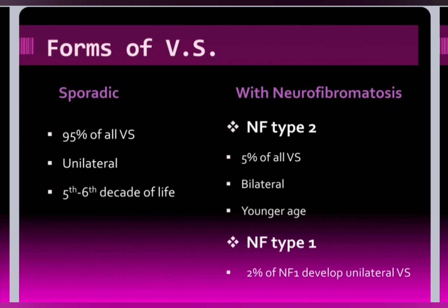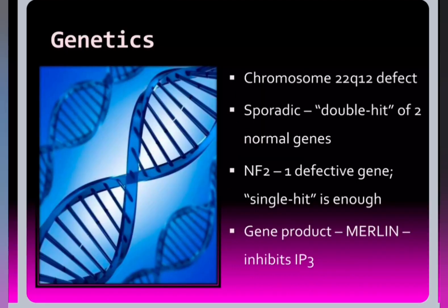Sporadic cases are more common, usually unilateral, and come in the 5th to 6th decade of life. Whereas if they are associated with neurofibromatosis, they present at a younger age and can be bilateral. Chromosome 22 is associated with neurofibromatosis, be it sporadic or in association with neurofibromatosis type 2.